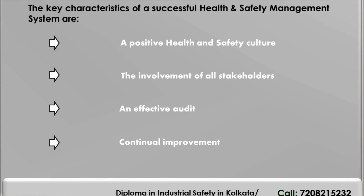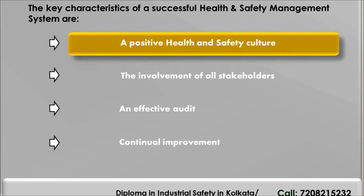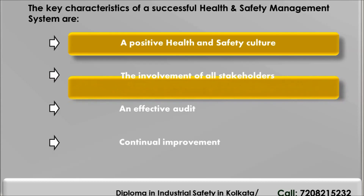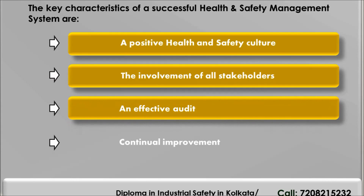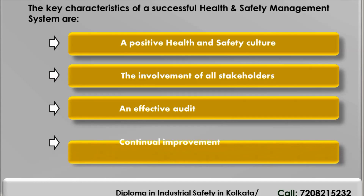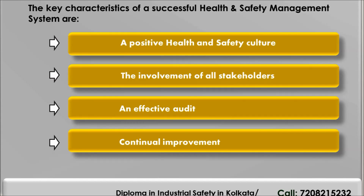The key characteristics of a successful Occupational Health and Safety Management System are: a positive health and safety culture, the involvement of all stakeholders, effective audit, and continual improvement.